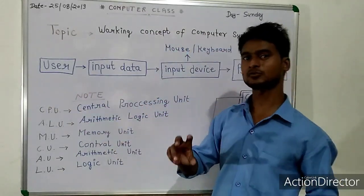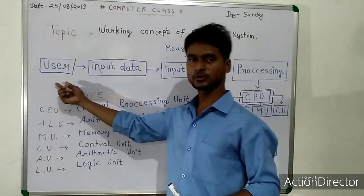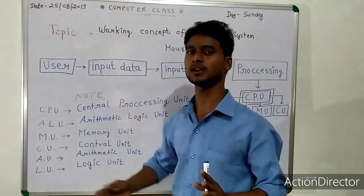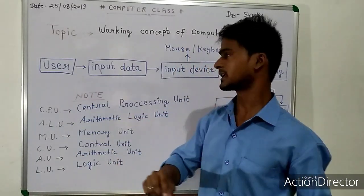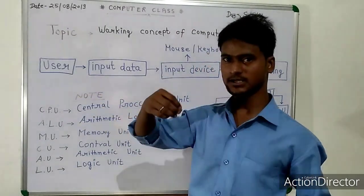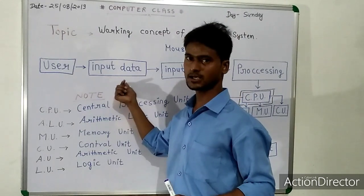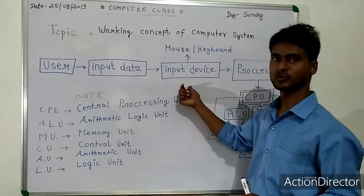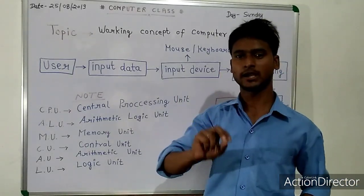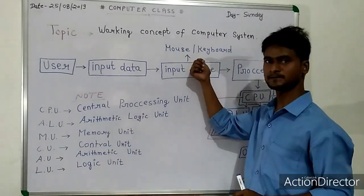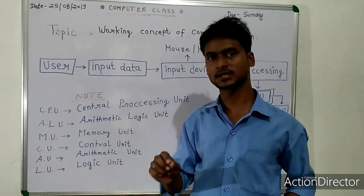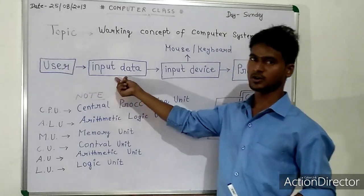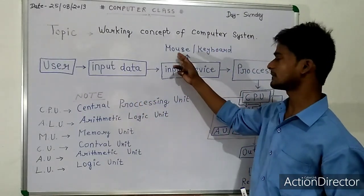The user is the person who operates the machine. The computer is used to operate. If there is any machine that operates, then the machine operates. When the computer is done, it is input — to get used to the machine. The data is input. If the computer is used to control the machine, the devices are the mouse and keyboard.